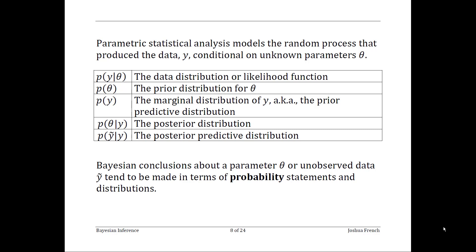P of theta is going to be used to denote the prior distribution about our vector of model parameters. P of y is going to denote the marginal distribution of y, obtained by integrating or summing the joint distribution of y and theta over the support of theta. The next distribution, P of theta given y, is known as the posterior distribution — one of the main distributions we seek in Bayesian statistics — closely followed by the posterior predictive distribution P of y-tilde given y.